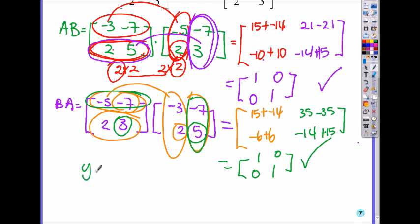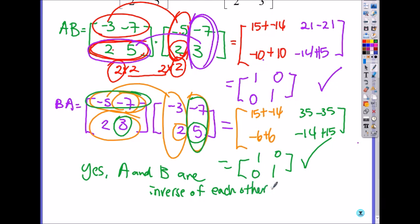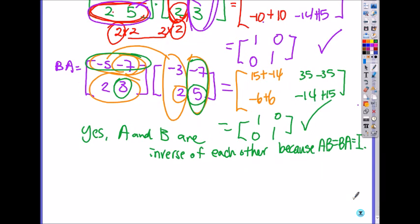Is this the identity matrix? Yes. So we can conclude: matrices A and B are inverses of each other, because A times B and B times A both equal the identity matrix. For your work, always include the conclusion. If it asks whether they are inverses, explain why or why not and show all the work. State that AB equals BA, which equals the identity matrix.